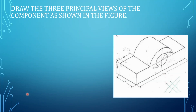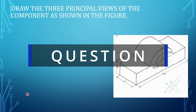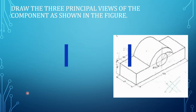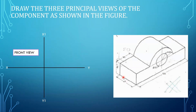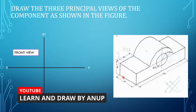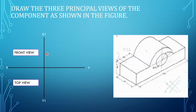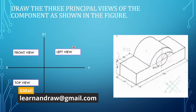Let's read the question: Draw the three principal views of the component as shown in the figure. You can see this is the machine component. The arrow mark here shows this will be the front view, this will be the top view, and this one will be the left view. Since they have given the left view, we have to draw the left view in the right profile plane. So we have to draw the front view at the left end, next below that the top view, and the left view on the right profile plane.